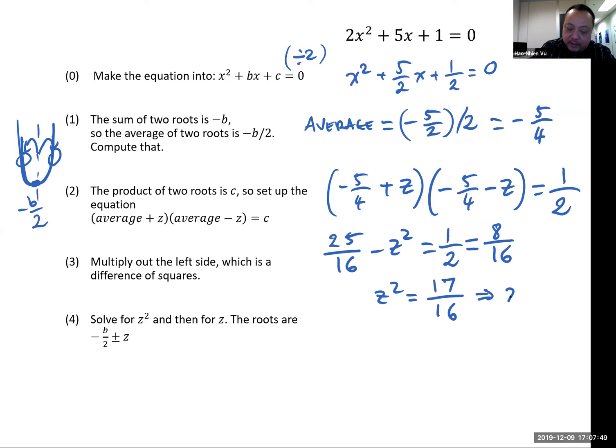So that gets me z is square root of 17 over 4. And so the roots are negative 5 fourths plus radical 17 over 4, and negative 5 fourths minus radical 17 over 4.